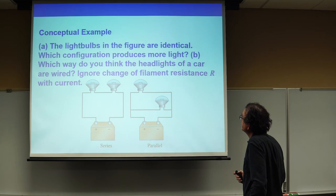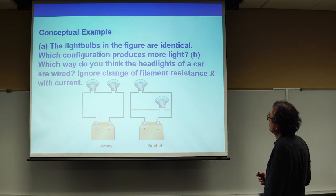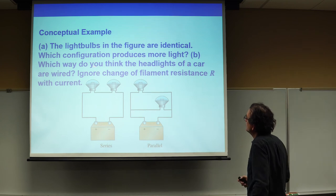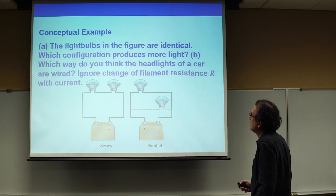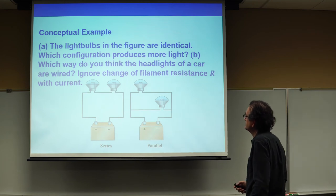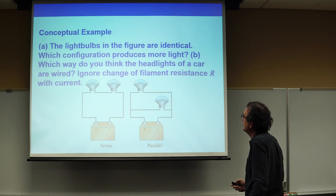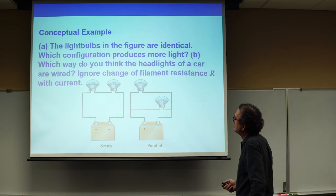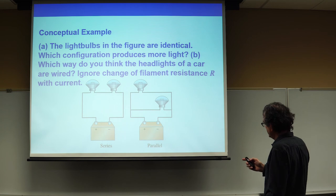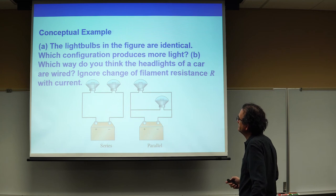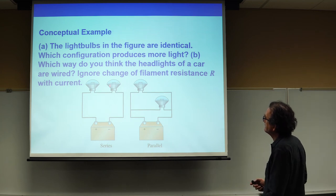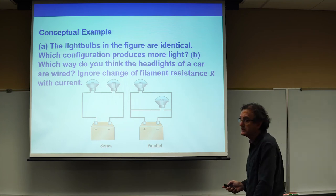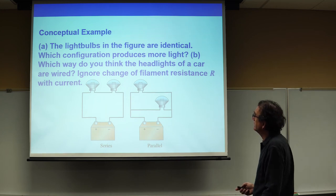A conceptual example: the light bulbs in the figure are identical — which configuration produces more light? And which way do you think the headlights of a car are wired? Obviously you want them wired in parallel, because if you lose a filament in one bulb, you still maintain the same current through the other one. Whereas if you lose a filament in a series circuit, the current stops in both, and you're suddenly driving in the dark instead of with just one headlight. Parallel is better.